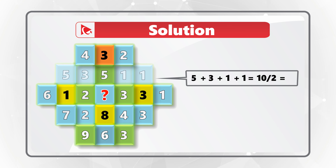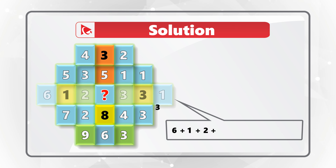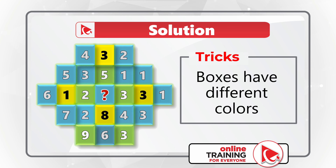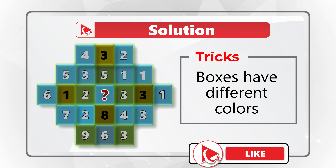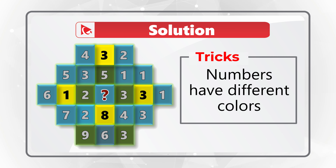The pattern is tricky but not impossible. Question designers used tricks to confuse you. The correct pattern: the middle number in each row equals half the sum of the other numbers in that row. In the first row, (4 plus 2) divided by 2 equals 3. In the second row, (5 plus 3 plus 1 plus 1) equals 10, divided by 2 equals 5. For the middle row: (6 plus 1 plus 2 plus 3 plus 3 plus 3 plus 1) equals 16, divided by 2 equals 8. The correct answer is choice D: 8.